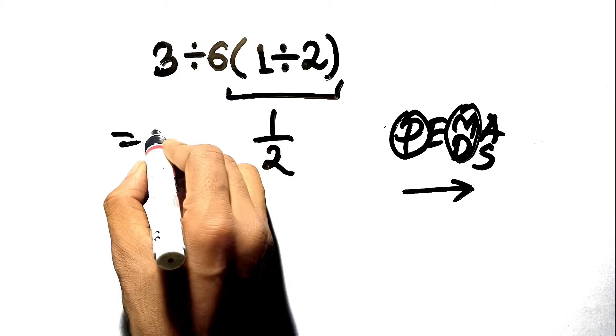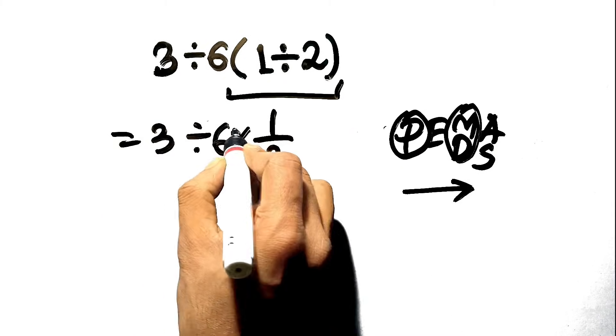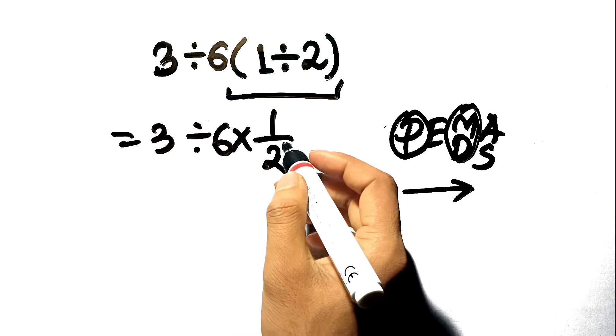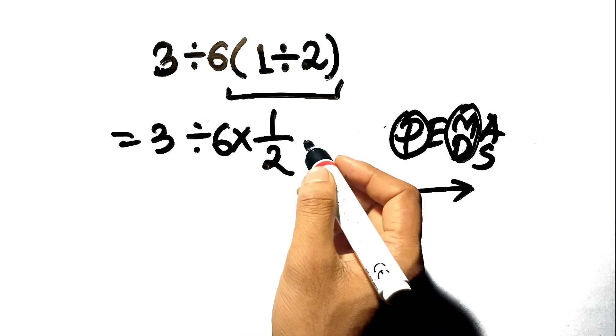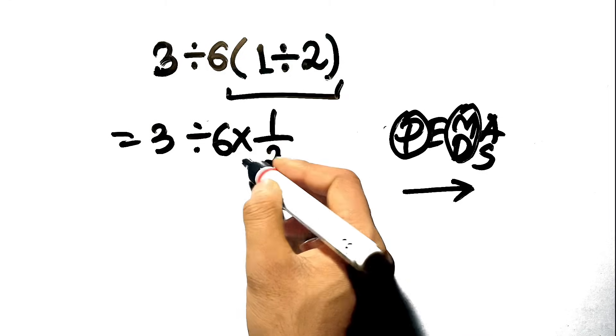Now the problem looks like 3 divided by 6 times 1 half, or 3 divided by 6 times 0.5. The multiplication sign is now explicitly visible.